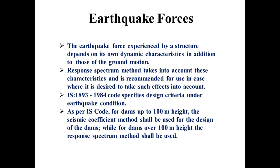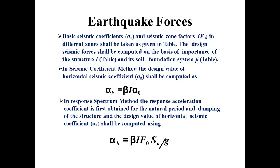IS code 1893-1984 specifies the design material under earthquake conditions. As per the code, for dams up to 100 meters height, the seismic coefficient method shall be used, while for dams over 100 meters height, the response spectrum method shall be used. According to the basic seismic coefficient F0 and seismic zone factor, the values in different zones can be taken from the table. The design seismic coefficient will be computed on the basis of importance of structure I, and the soil foundation system beta value, both taken from the table.